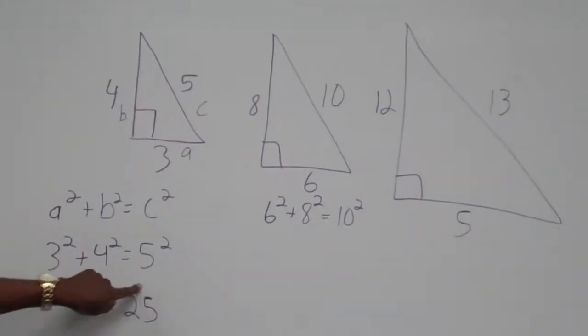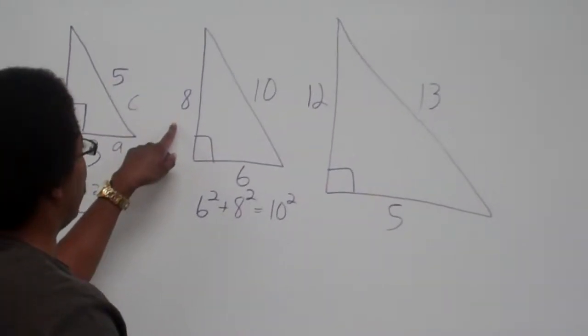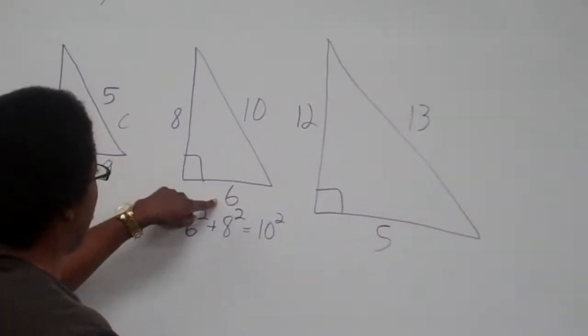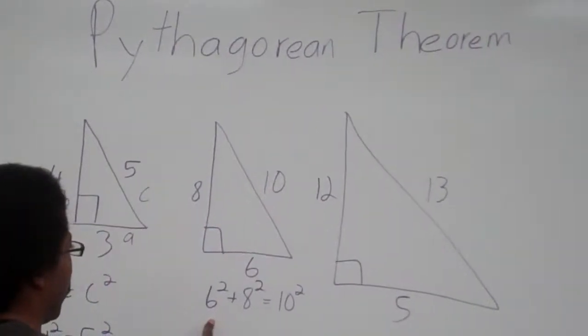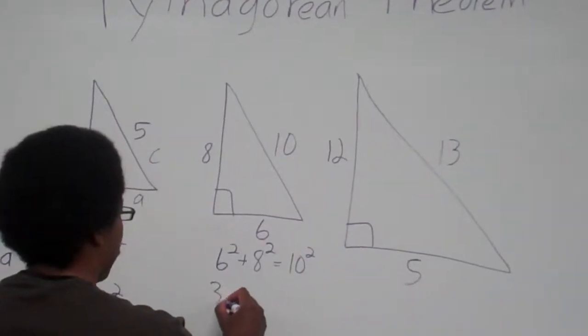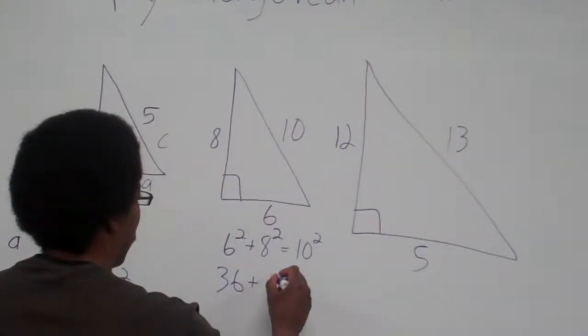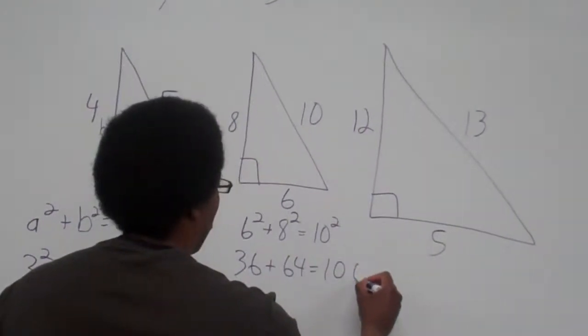3 squared plus 4 squared equals 5 squared. For this one, 6 would be the A, 8 would be the B, C would be the 10. So, 6 squared plus 8 squared equals 10 squared. Let's try it. 6 squared is 36, plus 8 squared is 64, equals 10 squared, which is 100.